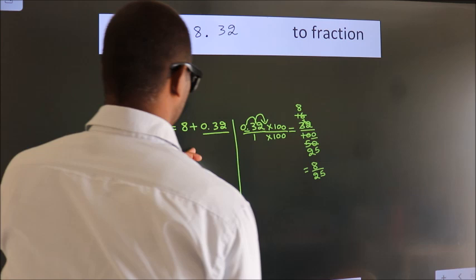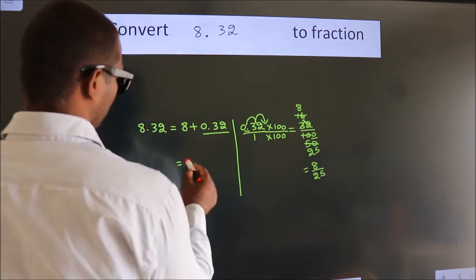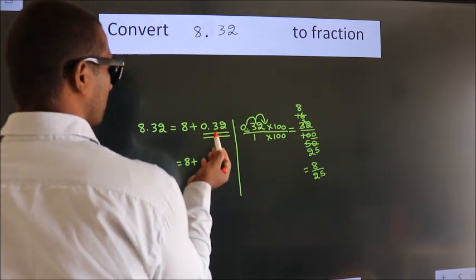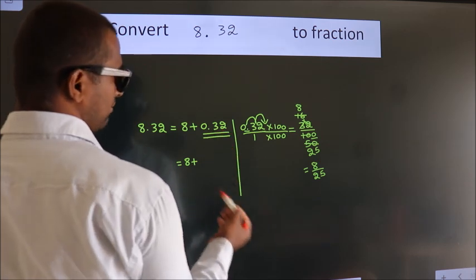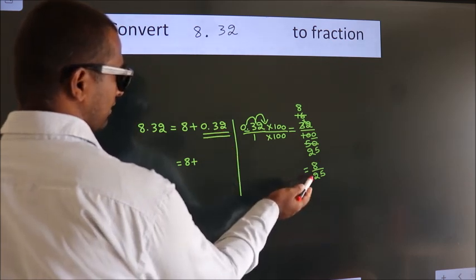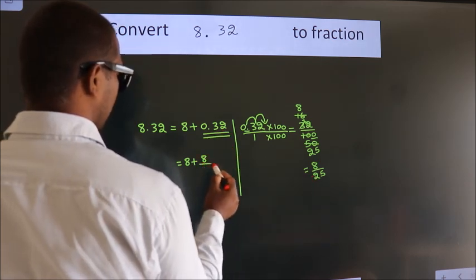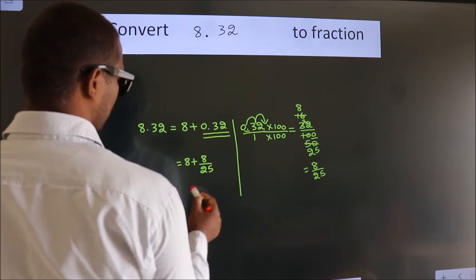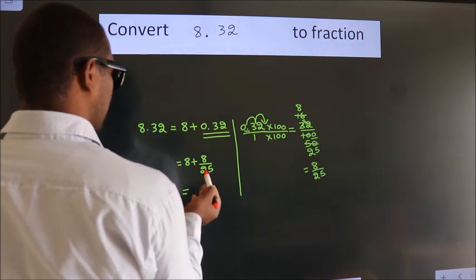Now here, 8 plus, in place of 0.32, we write this fraction 8 by 25. 8 plus 8 by 25.